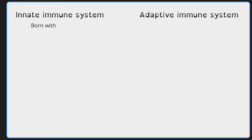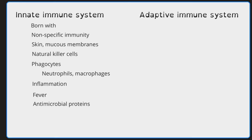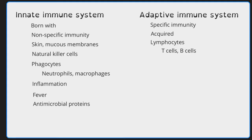As a quick overview: the innate immune system is the system you're born with, includes nonspecific immunity, skin and mucous membranes as the first line of defense, and cells such as natural killer cells and phagocytes — with neutrophils and macrophages being the two major types. It also includes inflammation, fever, and antimicrobial proteins. The adaptive immune system includes lymphocytes — T cells and B cells — which must learn and mature and have the ability to create memory cells. B cells lead to the production of antibodies.